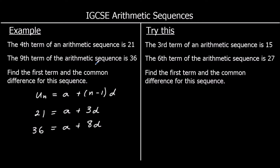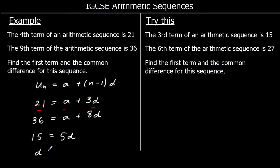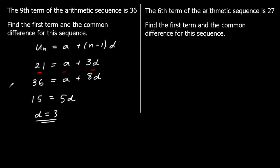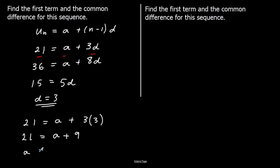We've got simultaneous equations now. Since a appears in both, we eliminate it by subtracting the top equation from the bottom: 36 − 21 = 15, a − a = 0, and 8d − 3d = 5d. So 15 = 5d, giving d = 3. Substituting back in: 21 = a + 3×3 = a + 9, so a = 12.